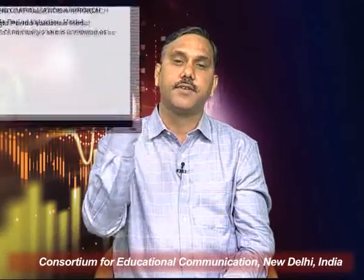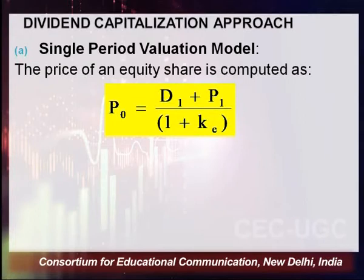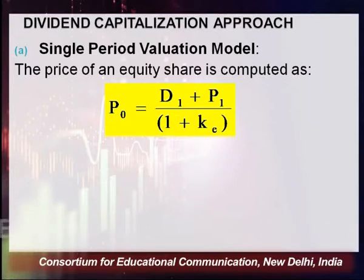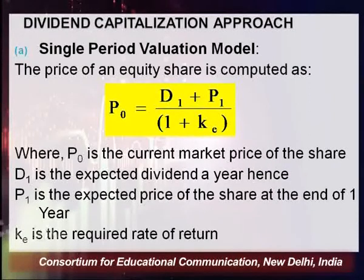Let's start with the dividend capitalization approach, beginning with the single period valuation model — meaning the valuation period is one year only. The price of an equity share is computed as: P₀ = (D1 + P1) ÷ (1 + ke), where D1 is the expected dividend (D0 × (1+g)), P1 is the expected price at the end of one year, and ke is the required rate of return.